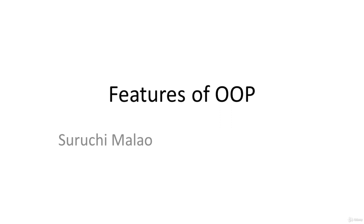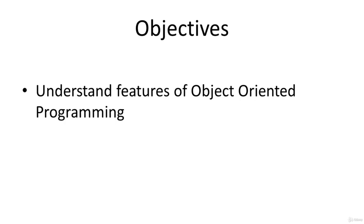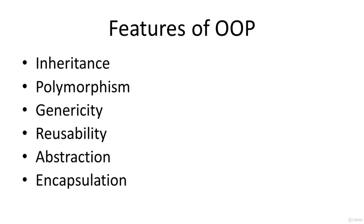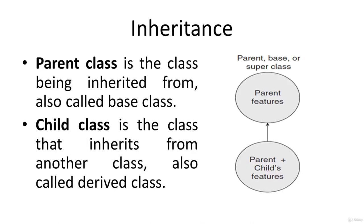Welcome to this session on features of object oriented programming. We will try to understand basic features of object oriented programming and go through some examples. Object oriented programming has multiple important features: inheritance, polymorphism, genericity, reusability, abstraction, and encapsulation. In this session we will go through inheritance and polymorphism. In the next session we will have an overview of other important features and then conclude with the advantages and disadvantages of object oriented programming. Let's start with inheritance.